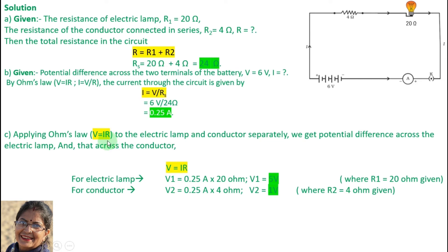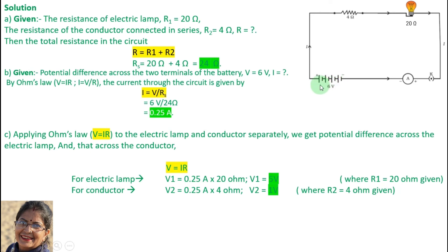Now the third part. Using V equals IR, we will find the potential difference across both components. We have V1 and V2. The current through the main circuit has been solved: it is 0.25 ampere.